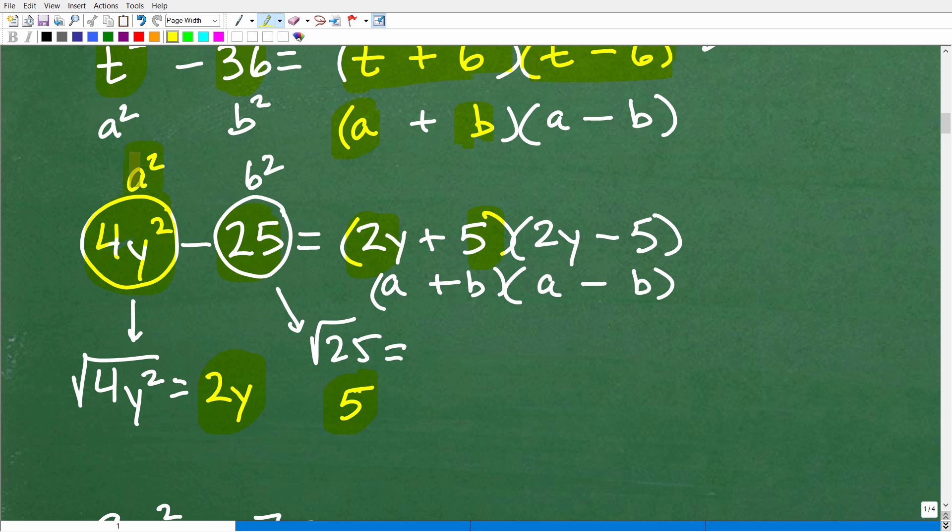Again, this whole thing is like our a squared. So to get the term, our a term, just take the square root of this entire thing. So the square root of, again, 4y squared is 2y. And the square root of 25 is 5. This is our a. This is our b. And then we just go ahead and plug in to the respective formula to get our factors for this 4y squared minus 25. So if you got that right and you knew that even before my explanation, then very, very good. Okay, nice job.